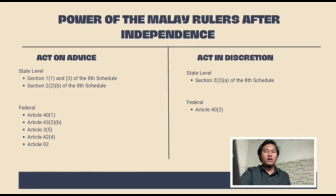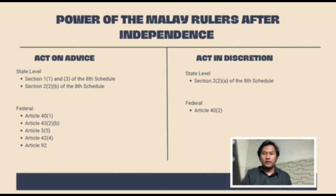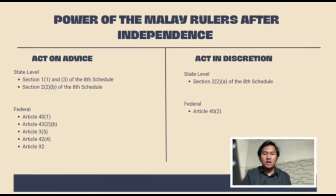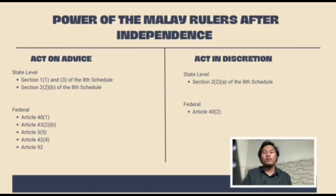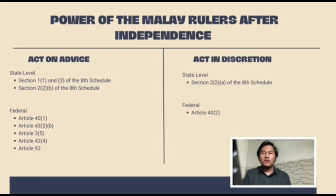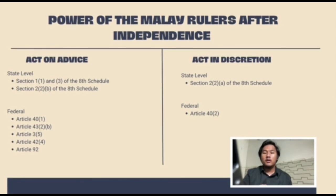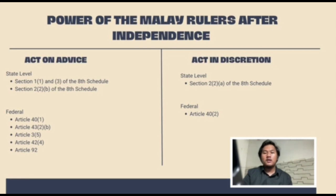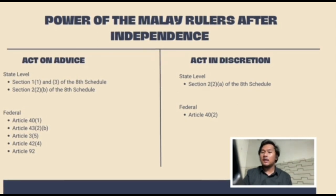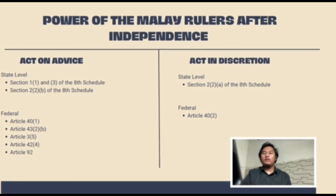For the second category, act on discretion, at the federal level, Article 40 clause 2 states that the Yang di-Pertuan Agong may act in his discretion in appointing the Prime Minister and in withholding the request for dissolution of Parliament by the Prime Minister. For the state level, it is more or less the same as the federal level but with a different situation. According to Section 2, subsection 2 of the Eighth Schedule of the federal constitution, the ruler shall appoint a Chief Minister who in his judgment is likely to command the confidence of the majority of the members of the state legislative assembly.